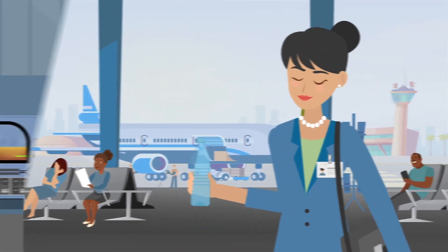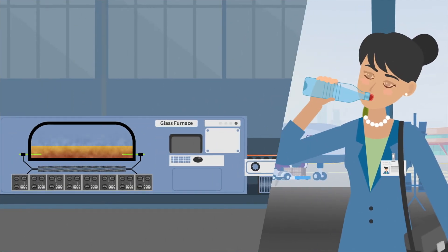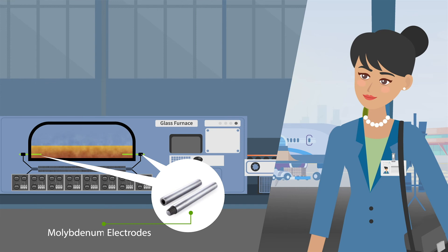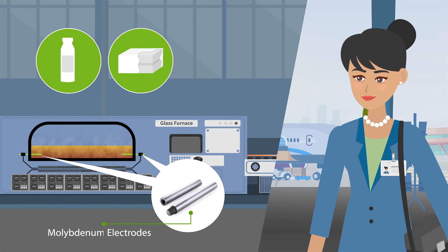H.C. Stark Solutions even enables the production of Mom's glass bottle. They manufacture molybdenum electrodes to heat up glass in huge furnaces so it can be cast and molded into bottles, fiberglass insulation, and medical test tubes, just to name a few.